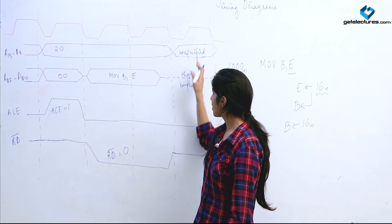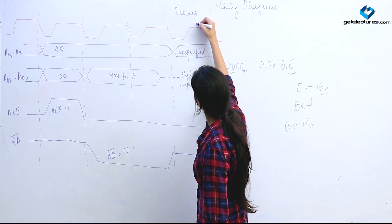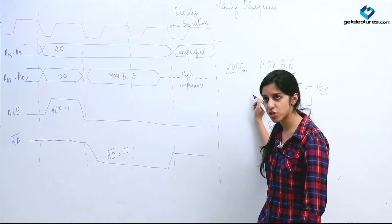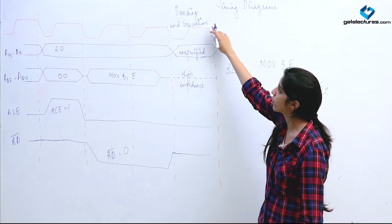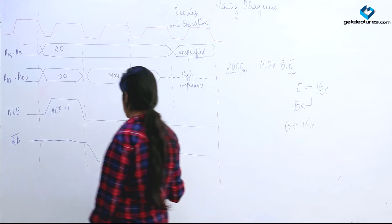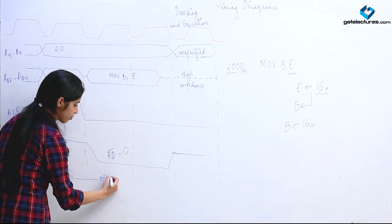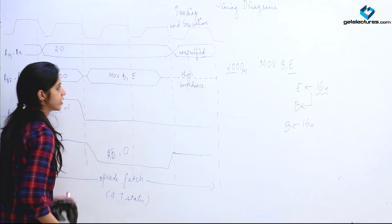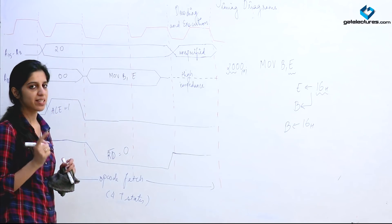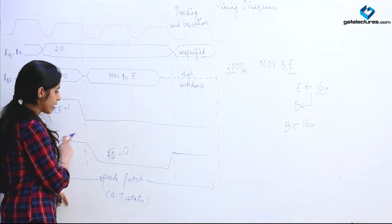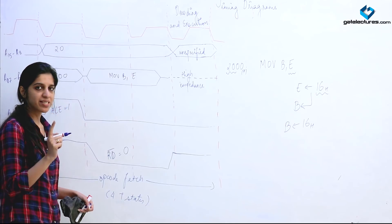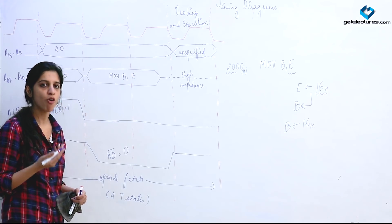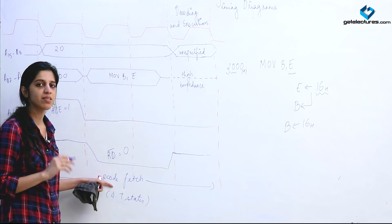In this T-state, decoding and execution happen together. Since no arithmetic/logic operation or memory access is involved, decoding and execution occur in the same T-state. This instruction therefore takes a total of 4 T-states — only opcode fetch is needed, which requires 4 T-states. Note: machine cycle and clock cycle (T-state) are different. Opcode fetch is one machine cycle; memory read and memory write are separate machine cycles, each potentially spanning different numbers of T-states.